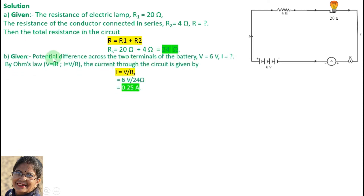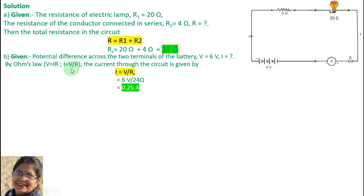Second part: the potential difference across the two terminals is 6 volts. Current is what we need to find. Using Ohm's Law: V equals IR, so I equals V divided by R. The current through the circuit is given by this formula.